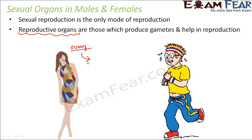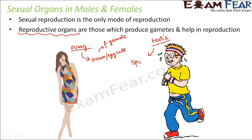The primary reproductive organ in a female is the ovary. The ovary produces the ovum or the egg cell, and this ovum is the female gamete. In case of a male, the primary reproductive organ is the testis. The testis produces the sperms, and the sperms are the male gamete.